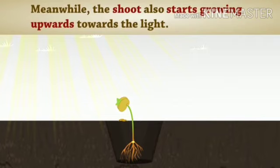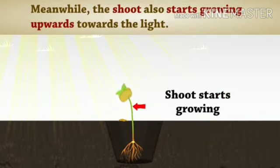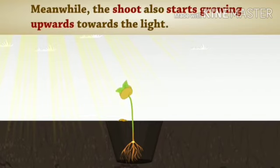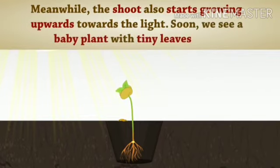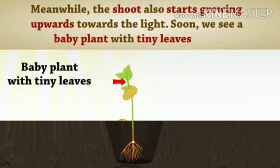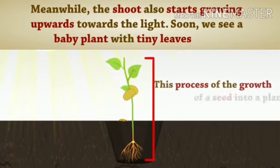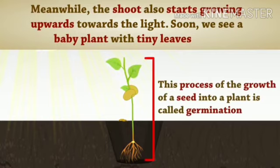Meanwhile, the shoot also starts growing upwards towards the light. Soon we see a baby plant with tiny leaves. This process of the growth of the seed into a plant is called germination.